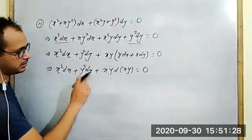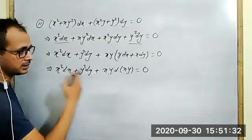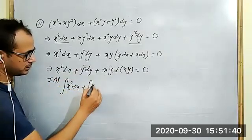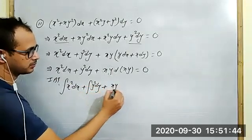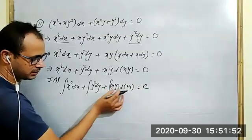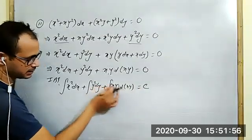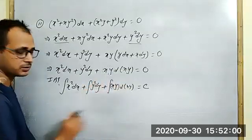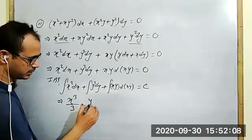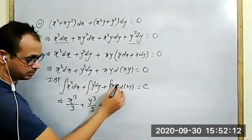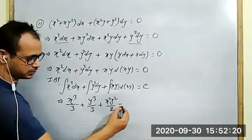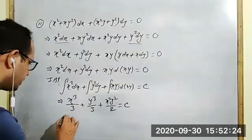Integrating both sides, integral x squared dx, integral y squared dy, plus xy dxy equal to constant. Your variable is with respect to xy. We get x cube by 3 plus y cube by 3 plus xy squared by 2 equal to constant.